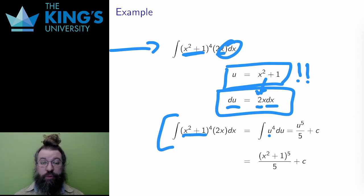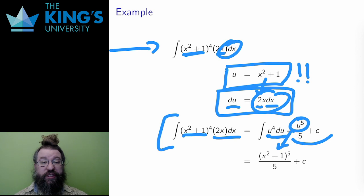In this case, x² + 1 gets replaced with u, 2x dx gets replaced with du. The result is the integral of u⁴, which is an inverse power rule. The antiderivative is u⁵/5 plus a constant. And then, to finish, I reverse the substitution and replace u with x² + 1. This is the final answer.